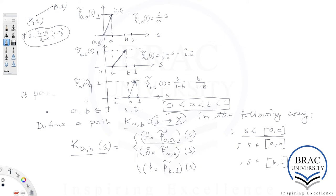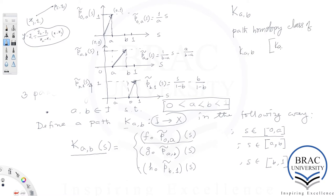The path K_{a,b} depends on the choice of a and b in (0,1). A can be very close to or far from b. So the definition of K_{a,b} depends on your choice. But the path homotopy class of K_{a,b}, denoted [K_{a,b}], does not depend on the choice of a and b — that's the most interesting part, and we need to show this.